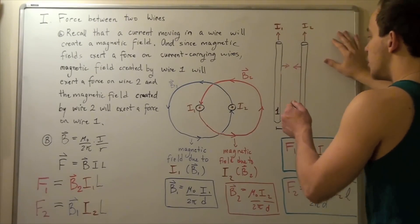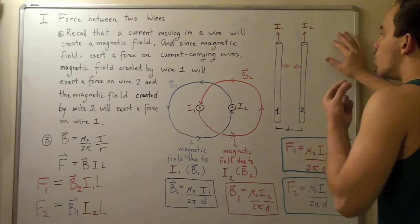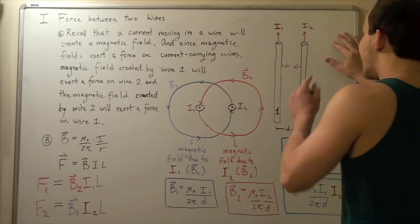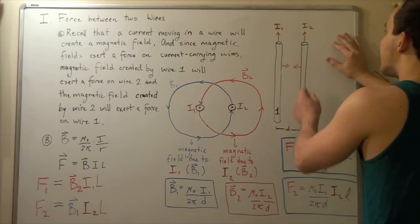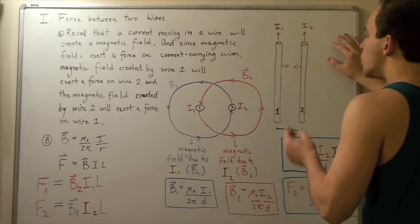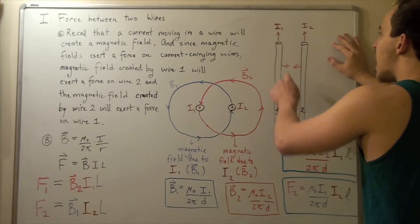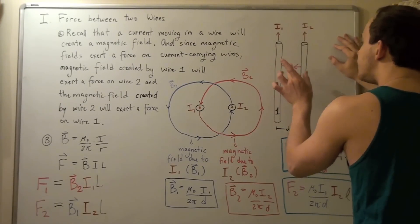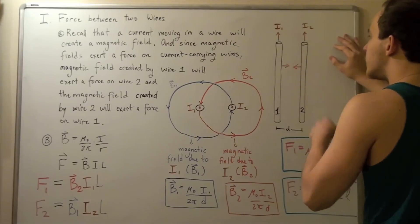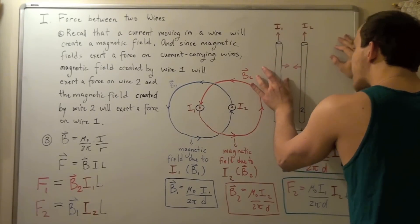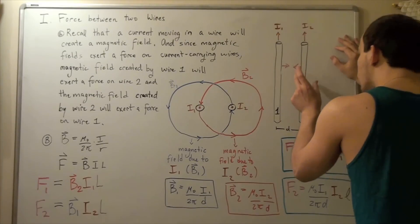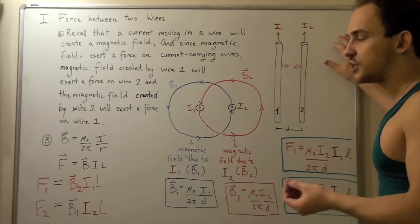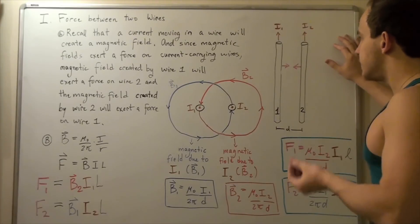The magnetic field B1 created by wire 1 will exert a force on wire 2. Likewise, the magnetic field B2 created by wire 2 will exert a force on wire 1. So the magnetic field of each wire affects the other wire.